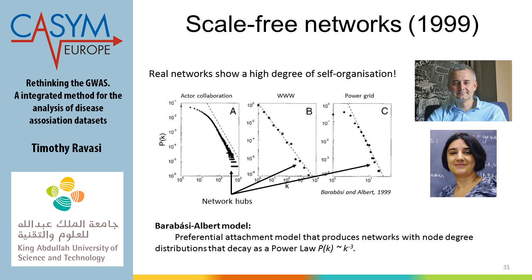The other important point is preferential attachment: the network grows by preferential attachment — the rich get richer. The probability that a hub gains a new interaction is higher than the probability that any other node gains one. The hub is like a famous actor: there's more probability that a famous actor will play in more movies than a new actor. Or if you invest a lot of money in the stock exchange and get a bigger return — that's preferential attachment.